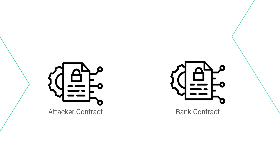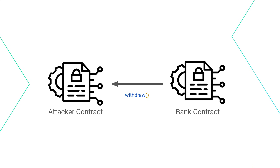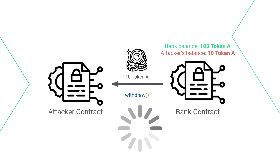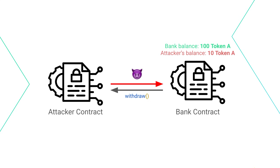For example, let's say there are two smart contracts: a bank contract and an attacker contract. The bank contract receives tokens and holds them in the smart contract's account for each user. It also has a withdrawal function that users can call to withdraw their funds. A re-entrancy attack would look something like this: the attacker contract deposits a certain amount of funds to the bank contract and then calls the withdrawal function. While the bank contract's withdrawal function is sending the funds to the attacker contract, the attacker contract calls the withdrawal function again.